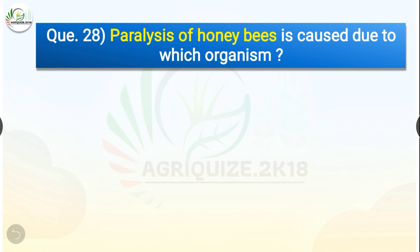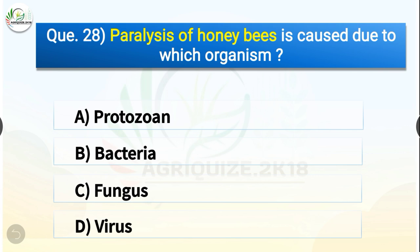Question number twenty-eight: Paralysis of honeybees is caused due to which organism? The options are protozoan, bacteria, fungus, or virus. The correct answer is option D — virus. Paralysis of honeybees is caused due to virus.